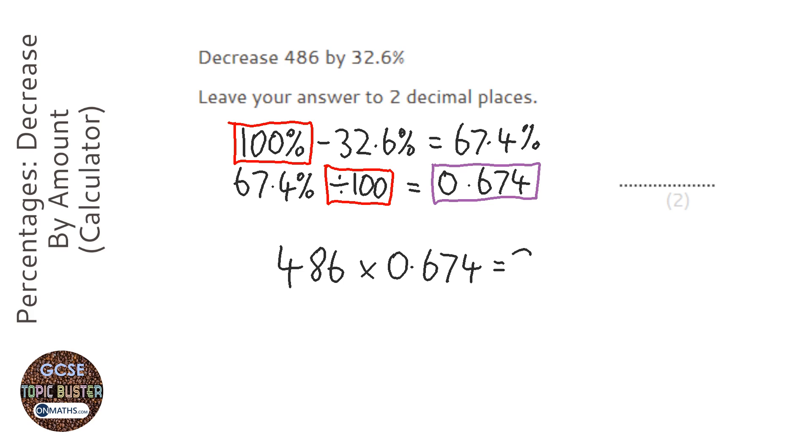Now the answer I get is 327.564. And if I put my line down here, because it's two decimal places, then that six is going to stay the same. So 327.56.